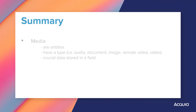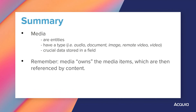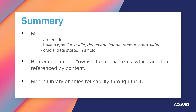So let us recap. Media are entities, and media entities have a type. Those types have a special field in which to store their important data. With content that has an image field, the content item is the thing that owns the image, and the image cannot be reused without re-uploading it. However, with media fields, it's the media system that owns the image, and therefore the content references the media item, thus enabling reusability. It's the Media Library that enables reusability. This is everything you absolutely need to know about the media system. Coming up, let's put these concepts to use. See you soon!